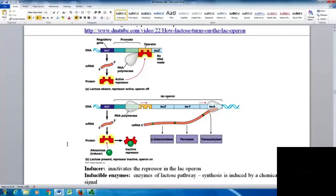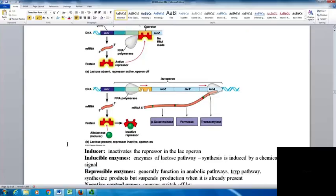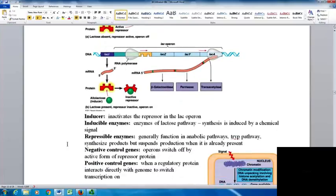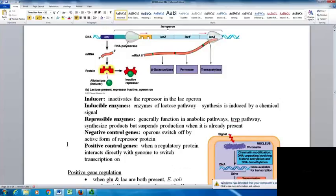The inducer inactivates the repressor in the lac operon. Inducible enzymes include the enzymes of the lactose pathway—synthesis is induced by a chemical signal. Repressible enzymes function in anabolic pathways like the tryptophan pathway, synthesizing products but suspending production when the product is already present to conserve energy.